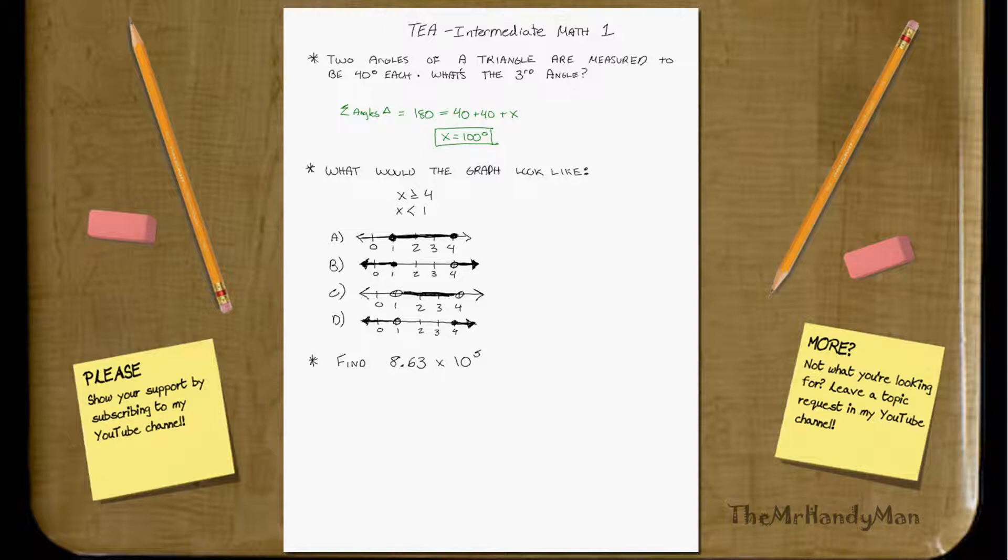Well, first thing to notice is whenever you see greater than or equal to and less than or equal to, that equals a nice, thick, solid dot. So this equals solid.